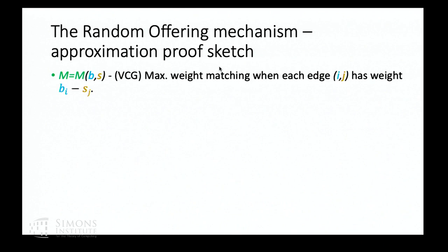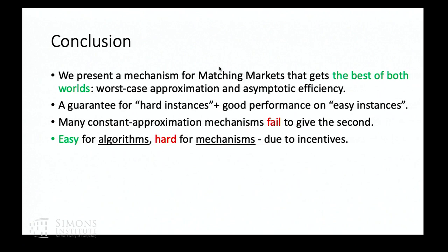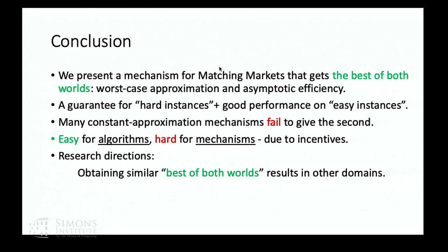To conclude: this mechanism achieves both types of guarantee. I like to think of it as a mechanism that gives some guarantee on hard instances and very good performance on easy instances. This is easy for algorithms but quite difficult for mechanisms because of incentive constraints. I think it's interesting to look for more mechanisms of this sort that can achieve this best-of-both-worlds property.